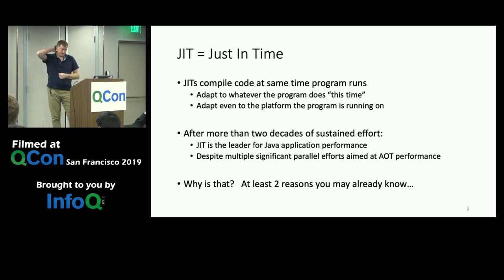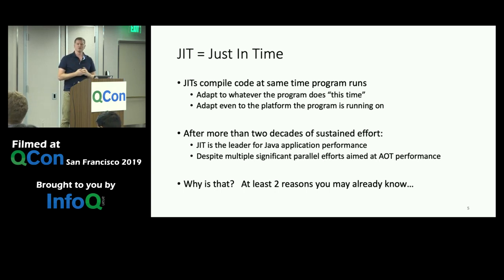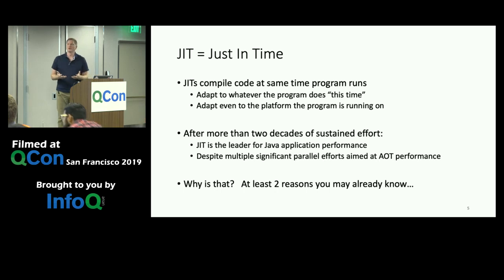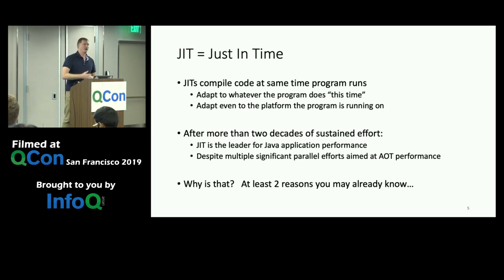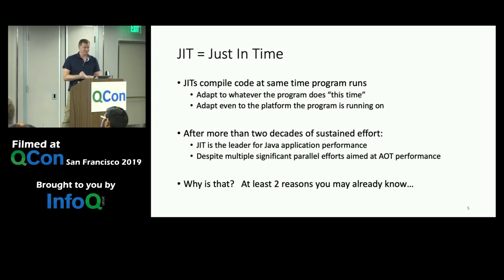JIT stands for "just in time." The JIT compiler is active at the same time your program is running, so it can adapt to everything happening as the program runs — it can collect profile data, watch classes getting loaded and unloaded, and adapt to the platform. You ship around class files, and you can run those on x86, ARM, or any platform, because the JIT compiler converts them to native code at runtime.